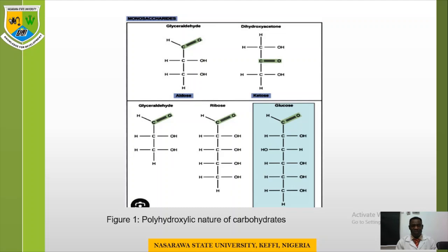Considering all these linear structures, we can see that glyceraldehyde has two hydroxyl groups; glycerose also has two hydroxyl groups. In the four-carbon compound ribose — an important constituent of our DNA or genetic material — we have three hydroxyl groups, while in glucose, the hexose sugar, we have five hydroxyl groups. That is why it is considered to be polyhydroxylic. That is what carbohydrates are.